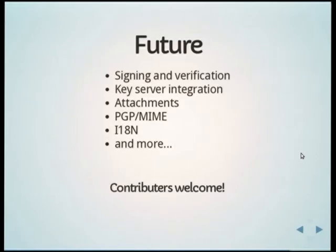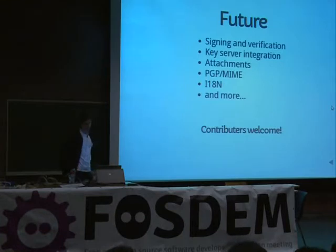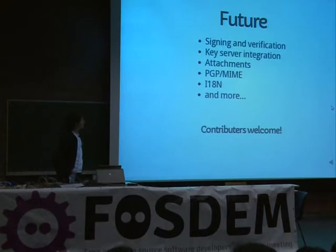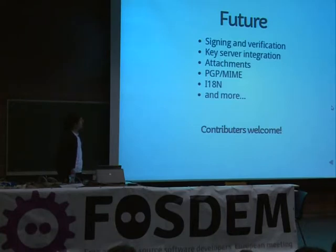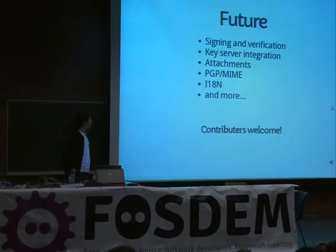Looking at the future: there is signing and verification, which is really the most-wanted feature. Signing is already in the development branch and can be tested. Key server integration is waiting. Attachment support is interesting and a challenge, but it's on the plan. PGP MIME is currently not supported — when you get a PGP MIME message it really looks weird, so that needs to be fixed. Translation is planned and more is coming. If you want to contribute, that would be very welcome — send a PR or get in touch.